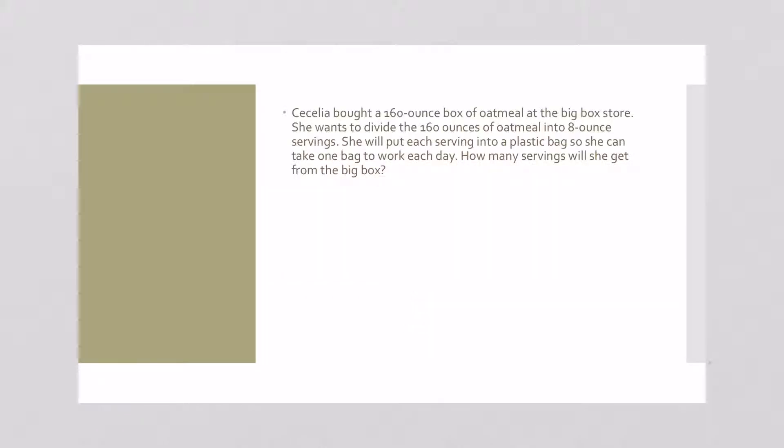Cecilia bought a 160 ounce box of oatmeal at the big box store. She wants to divide the 160 ounces of oatmeal into 8 ounce servings. She will put each serving into a plastic bag so she can take one bag to work each day. How many servings will she get from that box? So she wants 8 ounce servings in each baggie. So that would be 160 divided by 8.